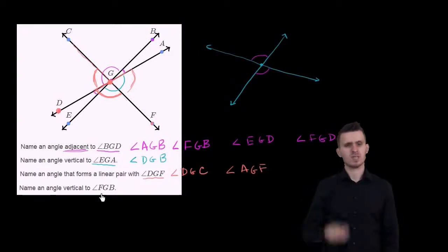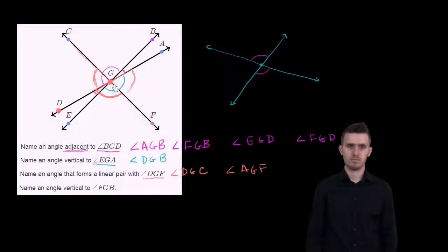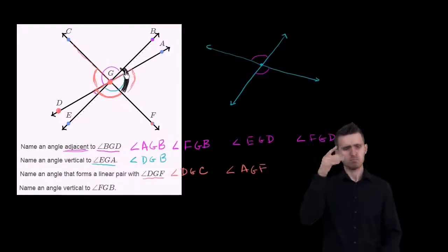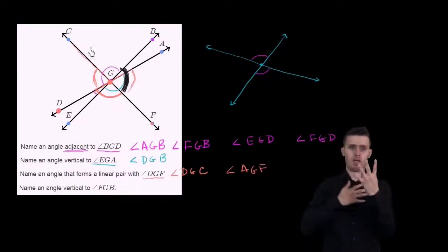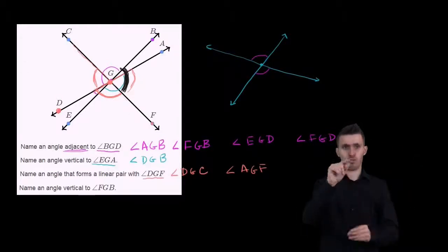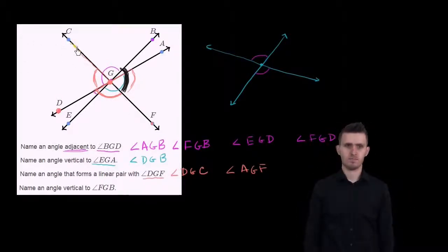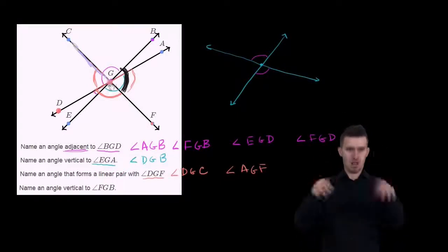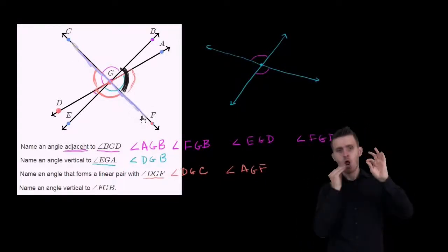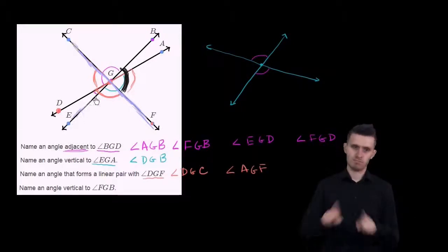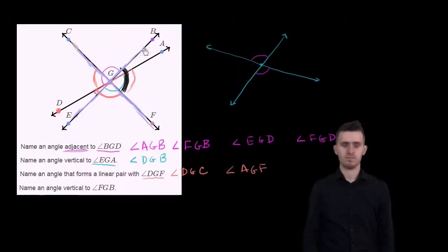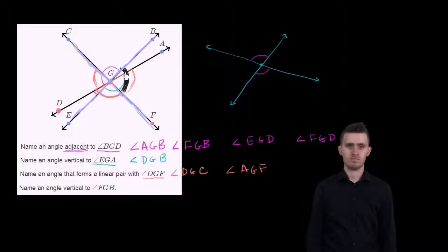Let's do one more. Name a vertical angle to angle FGB. So this is FGB right over here. You could imagine this angle is one of the four angles formed when CF and EB intersect with each other.